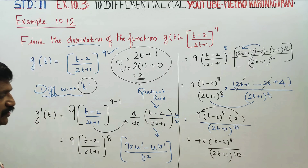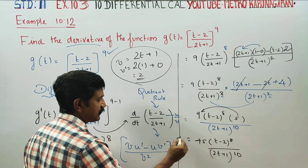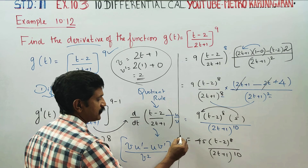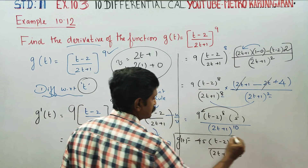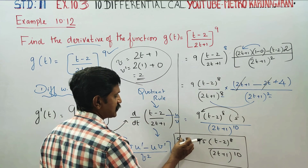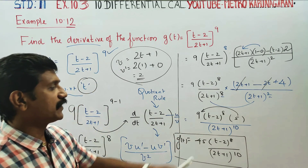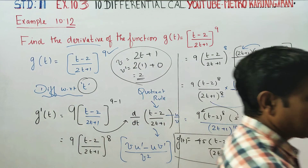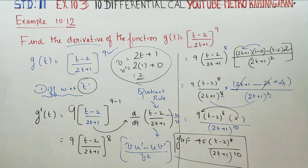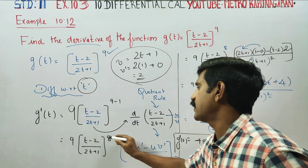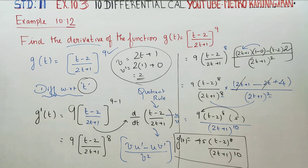That is your G dash T. G dash T is the differentiation of G. Your G dash T will be 45 into t minus 2 whole power 8 by 2t plus 1 whole power 10. In the future, you can use chain rule — this is called chain rule. When you differentiate like this, it is called chain rule. Thank you.